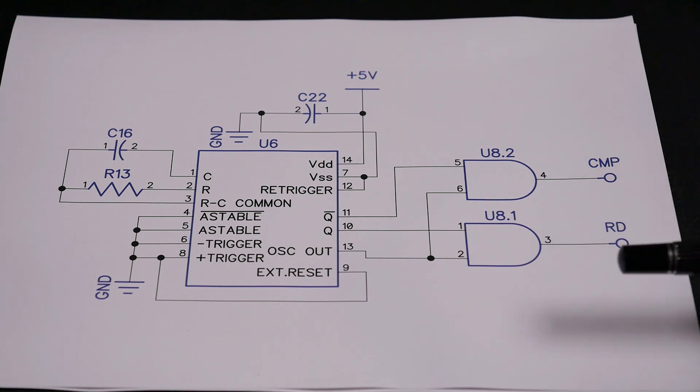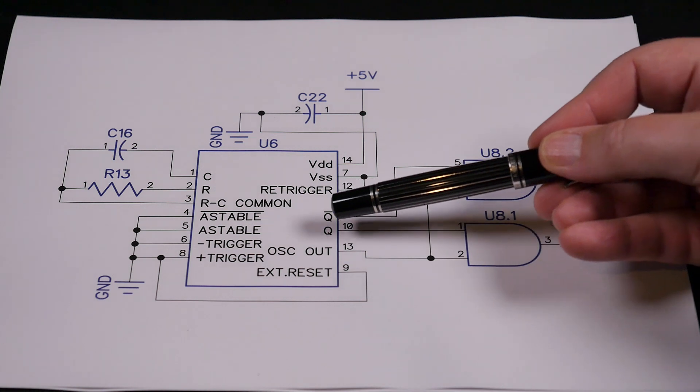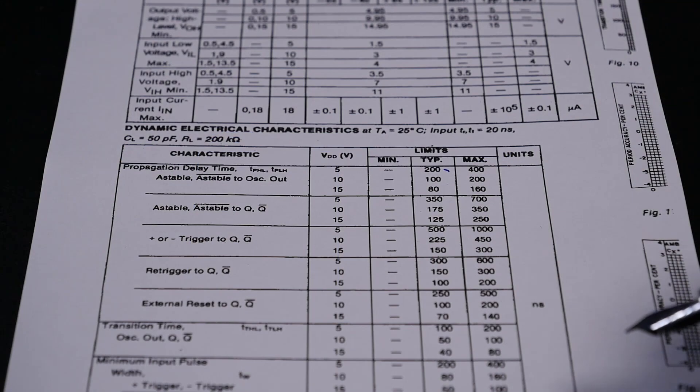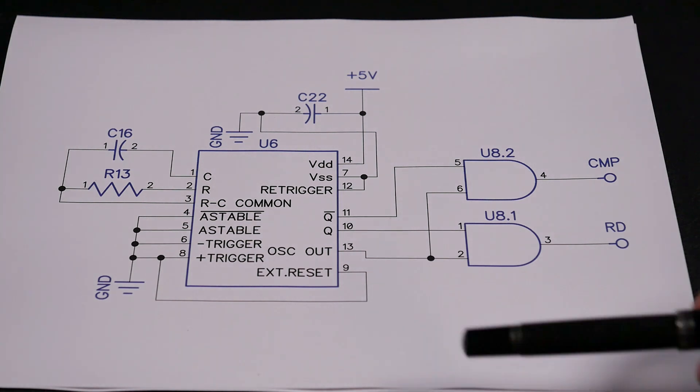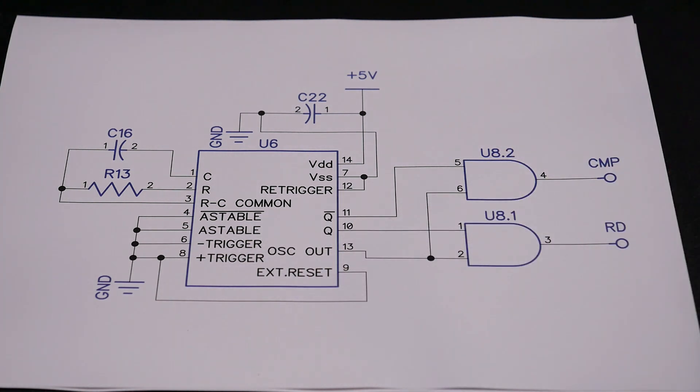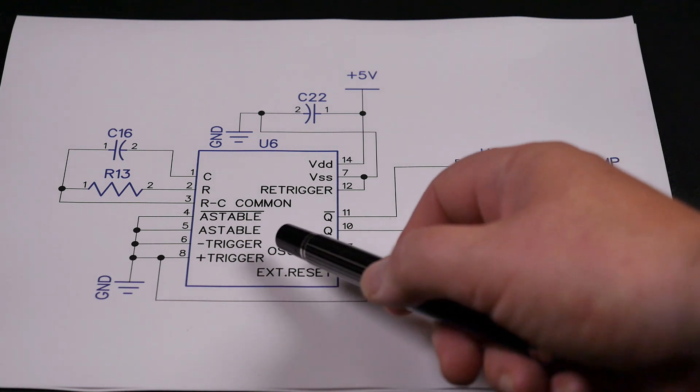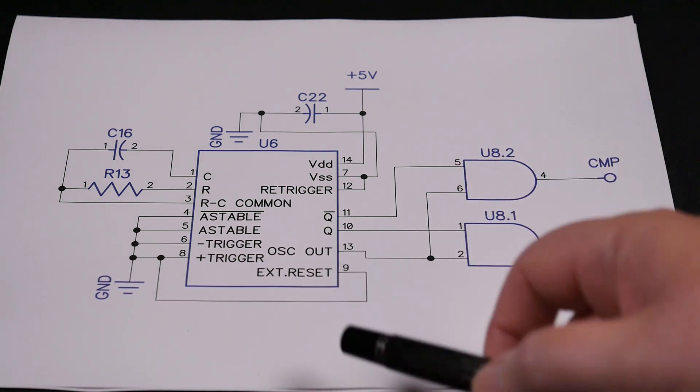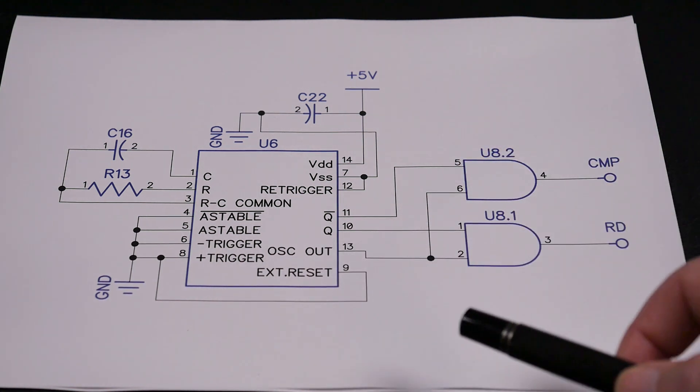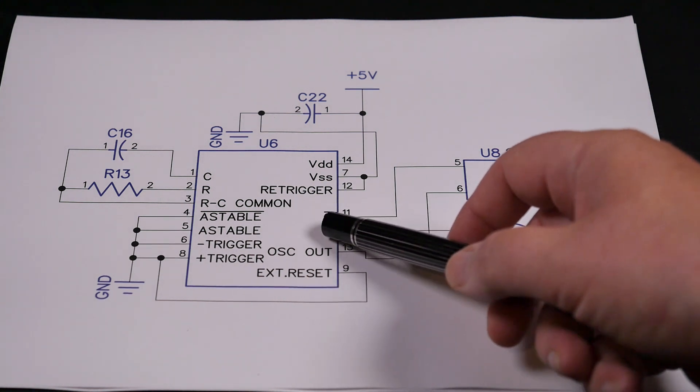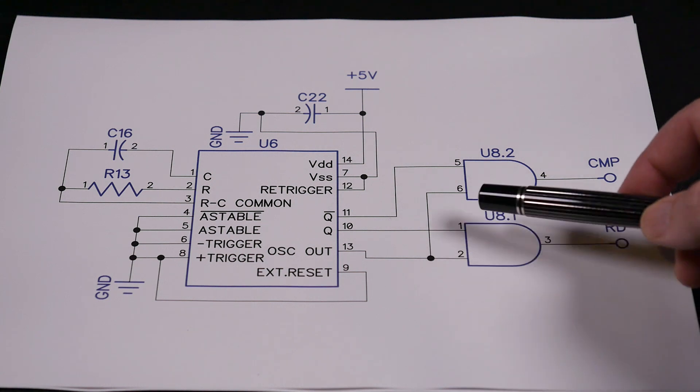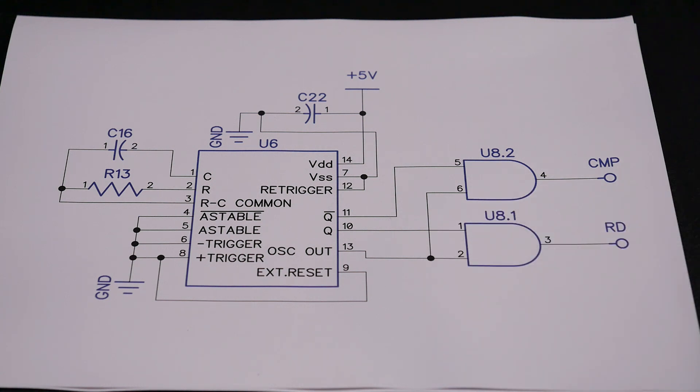Our issue is that we have maybe 200 nanoseconds or so of extra propagation delay on the main output relative to the oscillator output. What we're trying to do is suppress every second pulse from oscillator out, and we're relying on the fact that on every second pulse this output will be low, the condition of our AND gate will not be satisfied, and our output will be low.